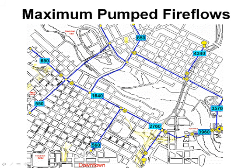And when you're done, you can display the fire flows. Here are the fire flows: 850, 1640, and so on. So this is how much flow you can get at this hydrant without lowering the pressure anywhere in the system below 20 PSI.